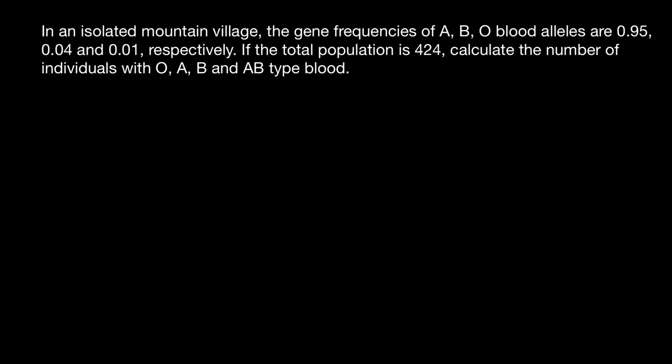If the total population is 424, calculate the number of individuals with O, A, B, and AB type blood. I recommend you pause the video here, try to solve this problem on your own first, and when you're ready run the video again to compare your answer with my explanation.